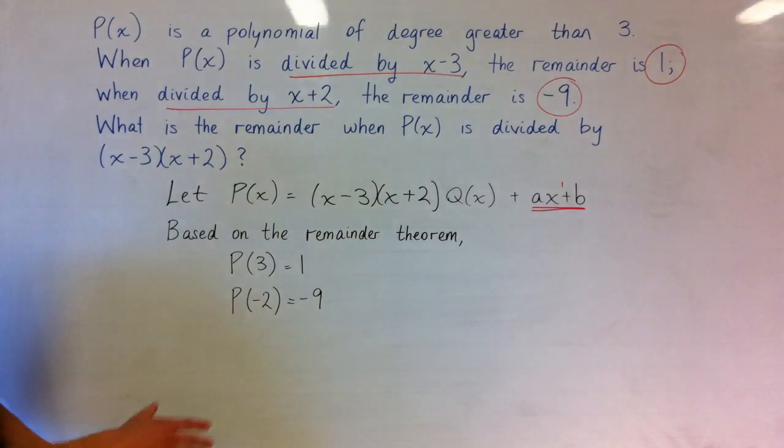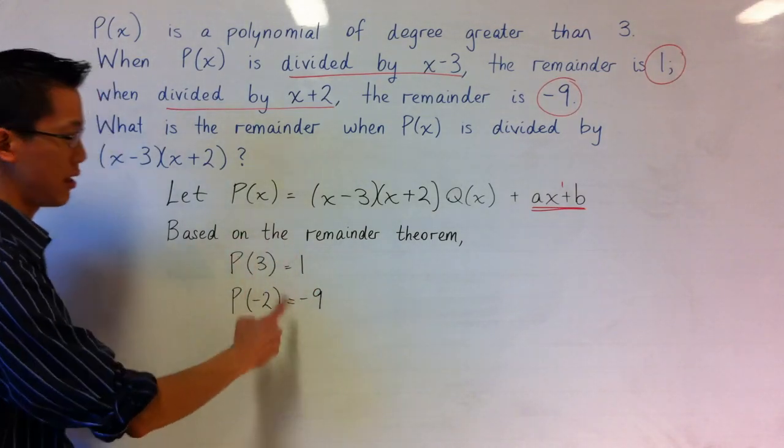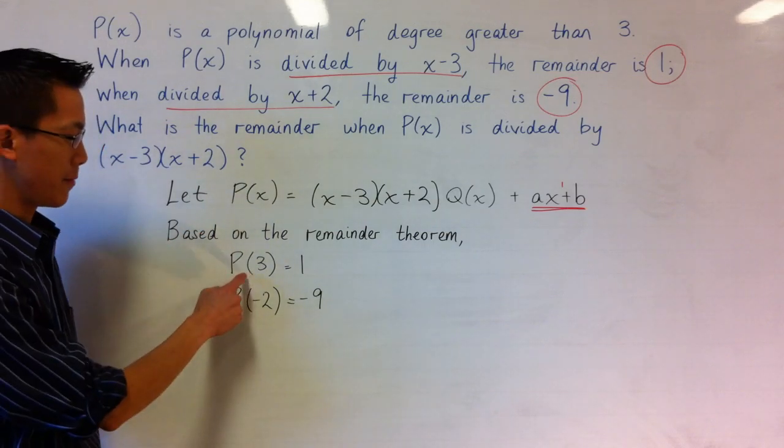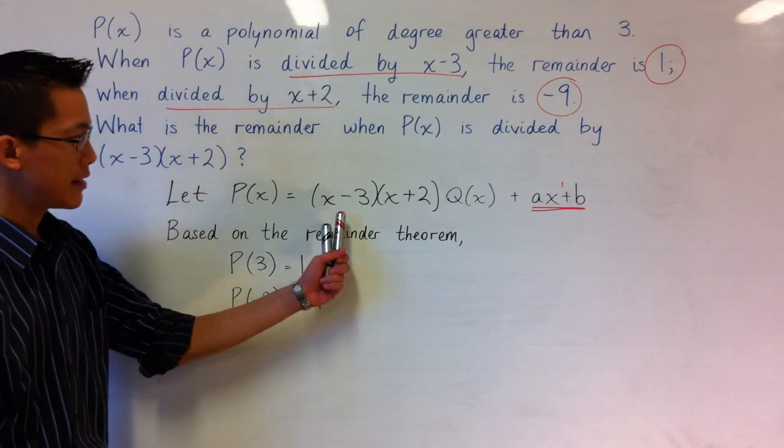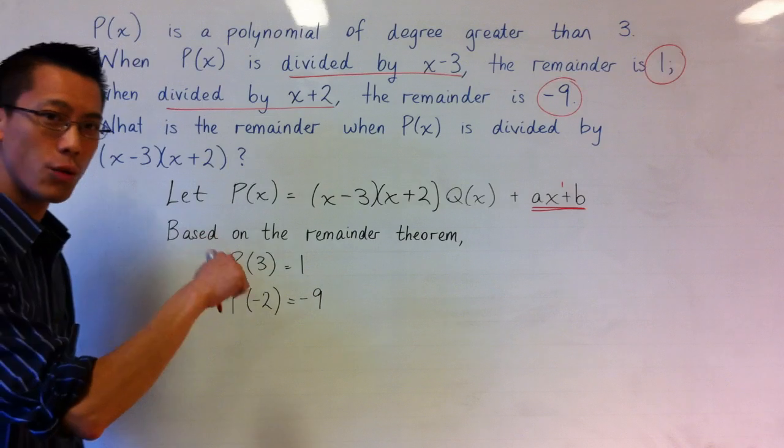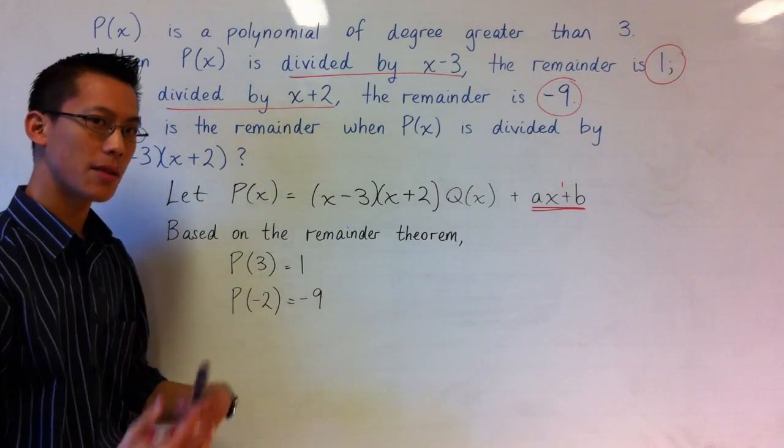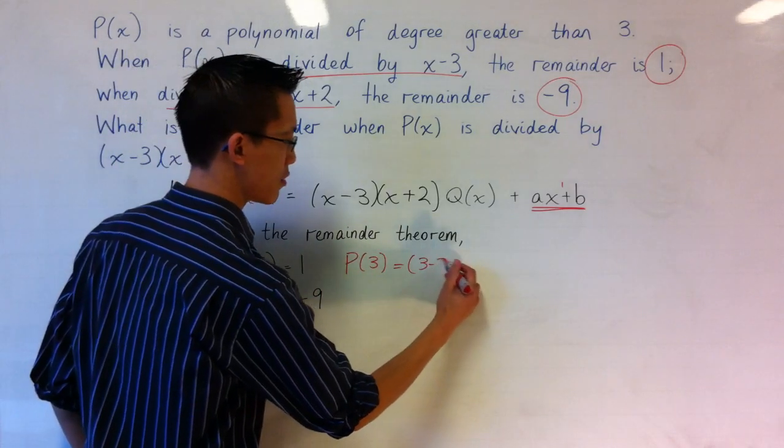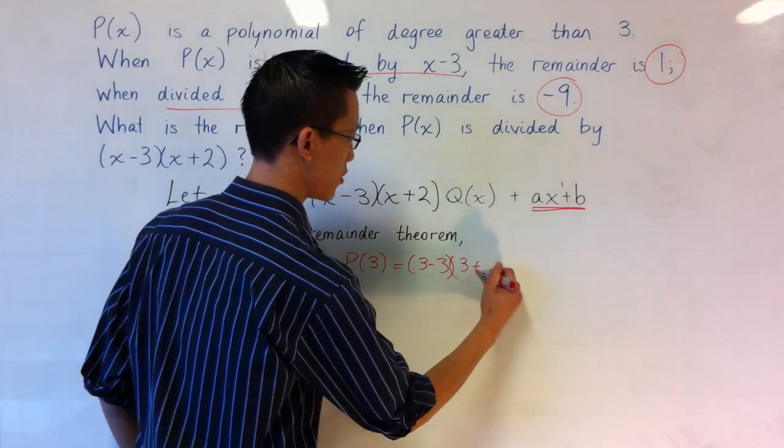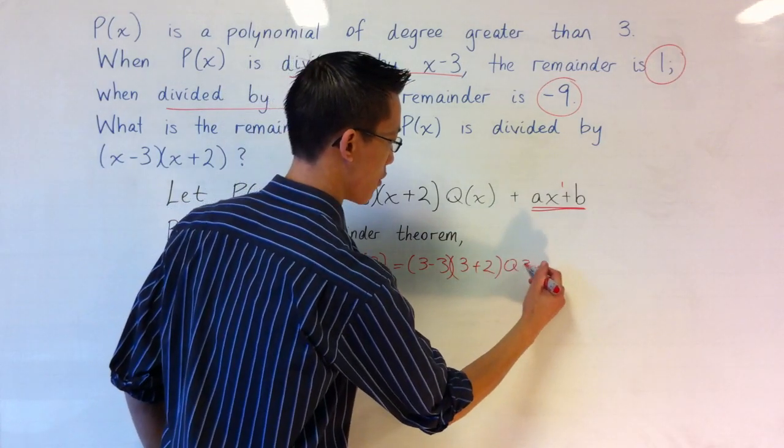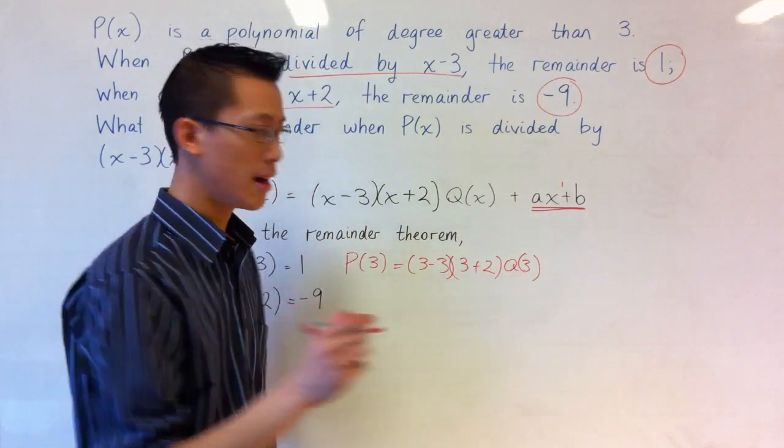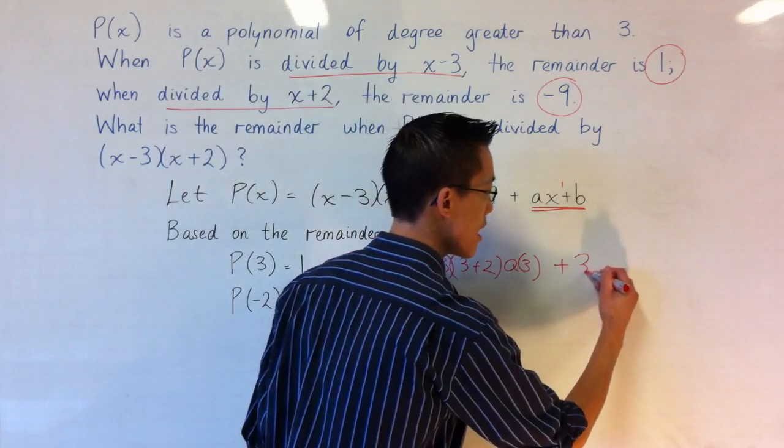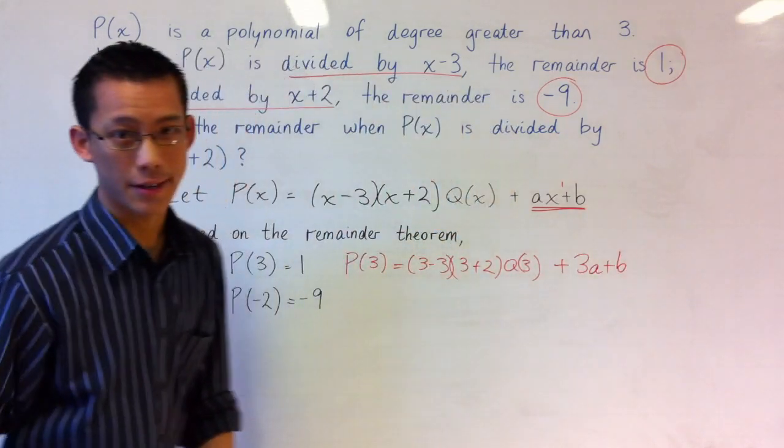Now the reason why this is useful is because I can interpret these equations here based on the form that I've expressed the polynomial in. So for example here, P(3) equals 1. Well if I take this line and I evaluate P(3), so everywhere I see x I'm going to substitute a 3. P(3) equals (3-3)(3+2)Q(3). Plus remember what I'm doing here is everywhere I see an x I'm going to replace it with a 3. So I have 3a plus b over on the end here.